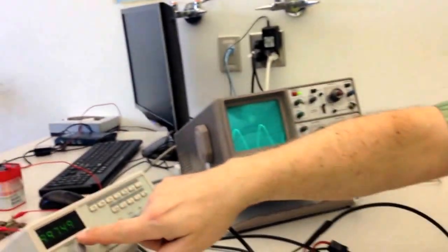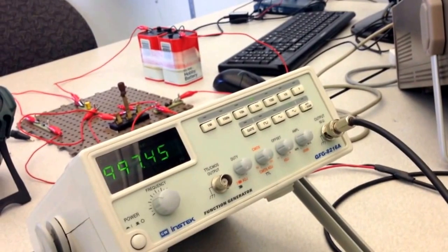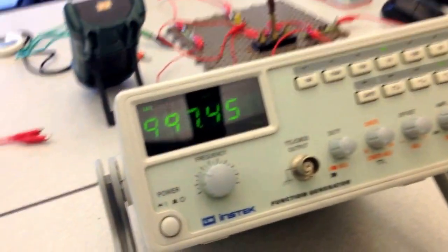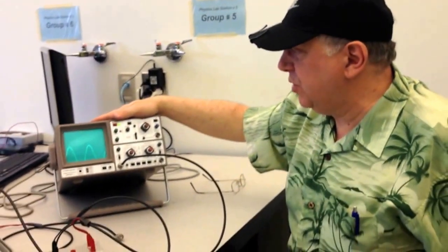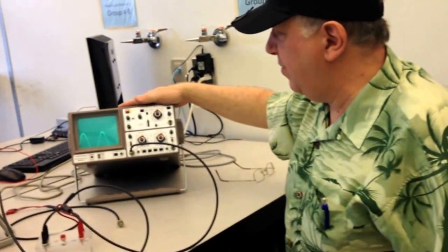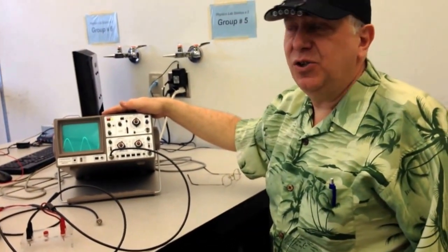And as you can see from the signal generator here, that's the frequency that is being applied. So, in summary, our AC voltage source is a signal generator. And our voltmeter that will allow us to actually measure and determine the voltage and also the frequency of the voltage source that we have is going to be determined by using an oscilloscope. So, that's it for today. Thank you.